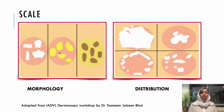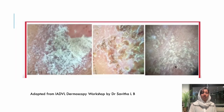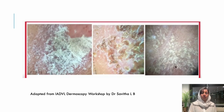Coming to what you see in scales: again, you look for morphology and distribution. Morphology includes whether the scale is white, yellow, or dark colored. Distribution involves whether it is in the periphery, center, irregular, or uniform throughout the lesion. In dermoscopic images, white scales and yellow scales can be observed. Yellow scales mainly indicate scales mixed with plasma, giving them a yellow color, or they can be mixed yellow and white.